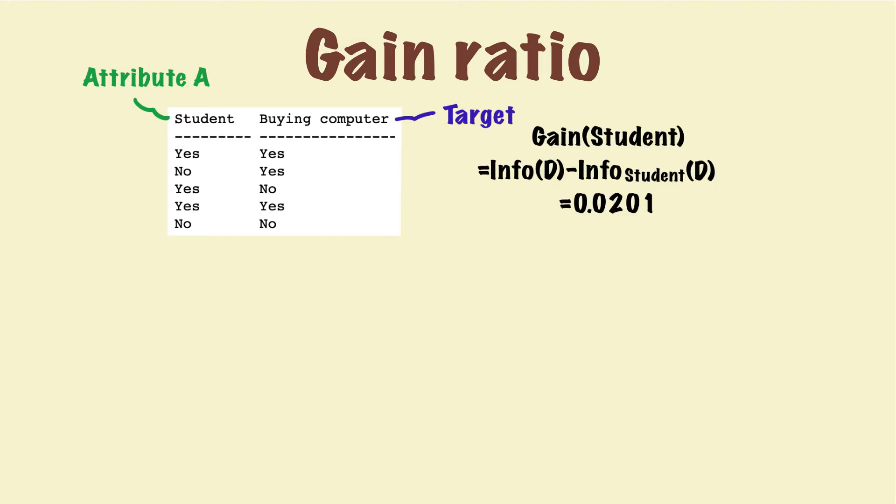In the previous videos, we figured out the information gain of the attribute student is 0.021. To convert information gain to gain ratio, we need to calculate split information of attribute student. And I put the formula here for reference.